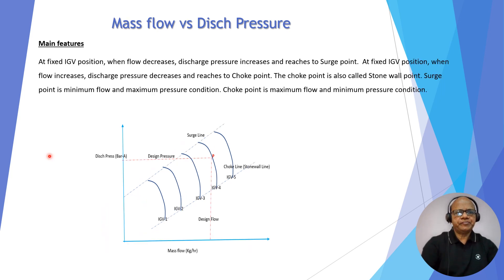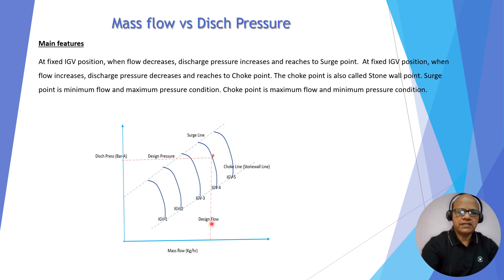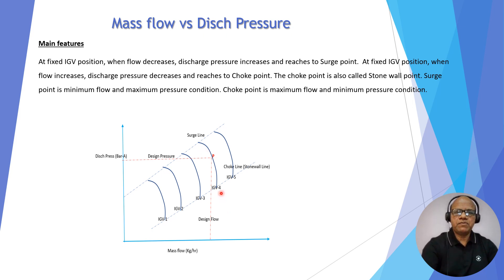The main feature is: at a fixed IGB position, when flow decreases, discharge pressure increases — you can see here. The flow has decreased but pressure has increased and reaches to a point which is called the surge point. At fixed IGB position, when flow is increased, this flow is increasing but discharge pressure decreases and reaches to the point which is called the choke point. The choke point is also called the stone wall point. The surge point is the minimum flow and maximum pressure rise condition called surge, and the reverse — maximum flow and minimum pressure rise — is the choke.